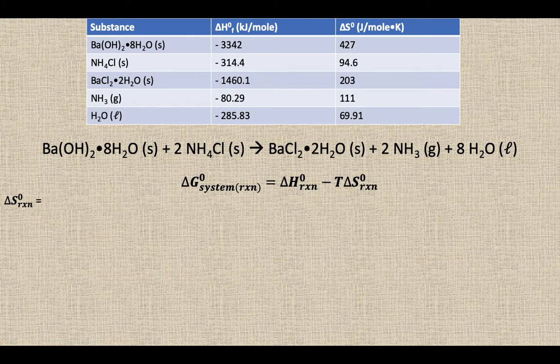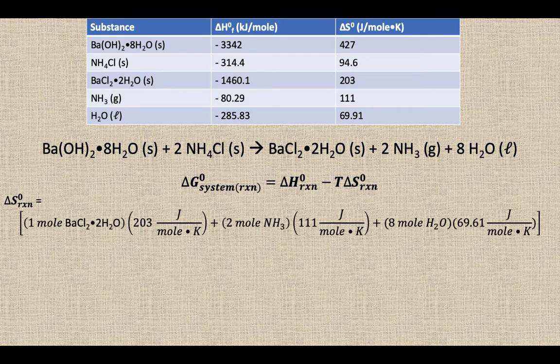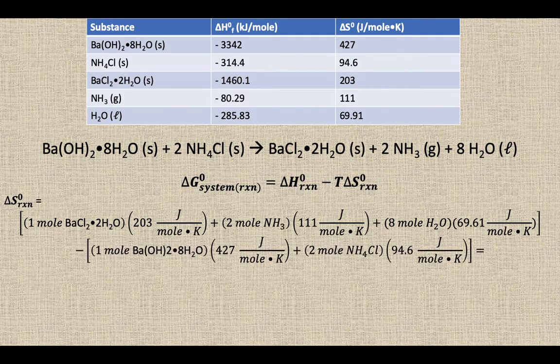Let's look at the state of order or disorder that we have going on here. So delta S, we do our products minus our reactants. So we need the delta S of that barium chloride dihydrate, the two moles worth of ammonia, and eight moles worth of water. We do products minus reactants, so we subtract out the one mole worth of barium hydroxide octahydrate and two moles worth of ammonium chloride.